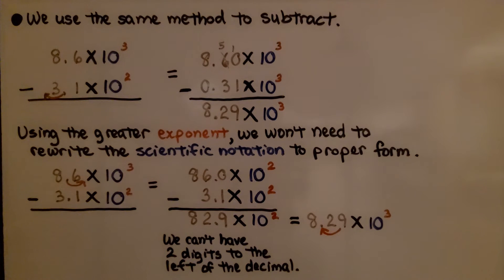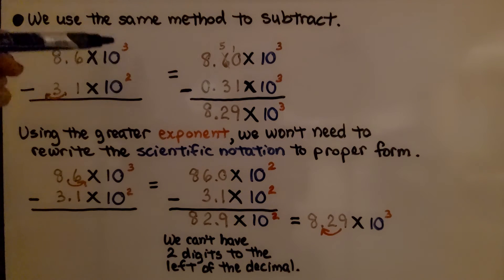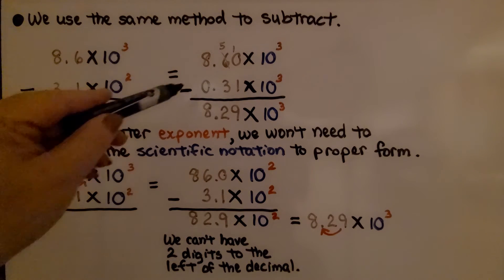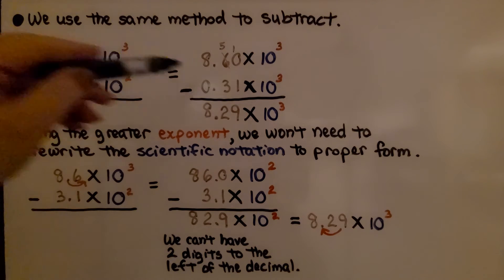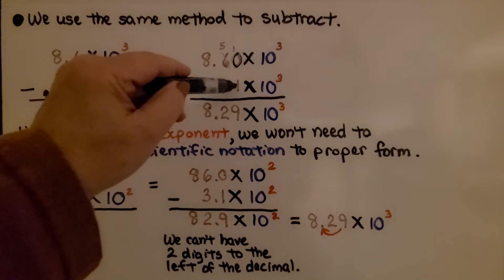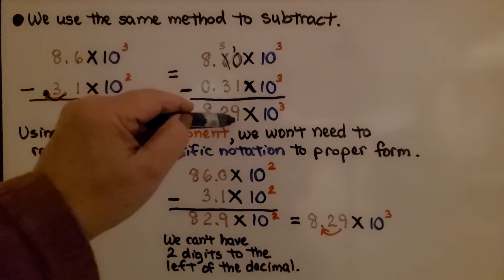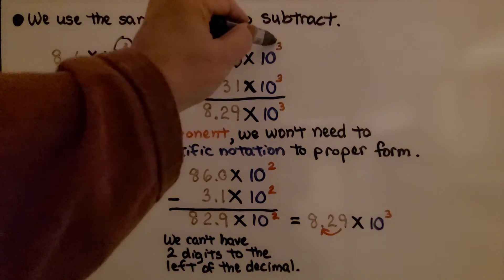We use the same method to subtract. Here one number is raised to the third power and the other to the second power. We bring the second power up to the third by moving the decimal one hop to the left, giving us 0.31 times 10 to the third power. Now we subtract — adding a trailing zero to help — and get 8.29 times 10 to the third power.